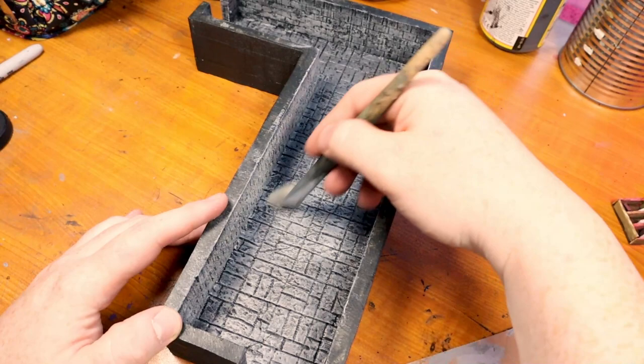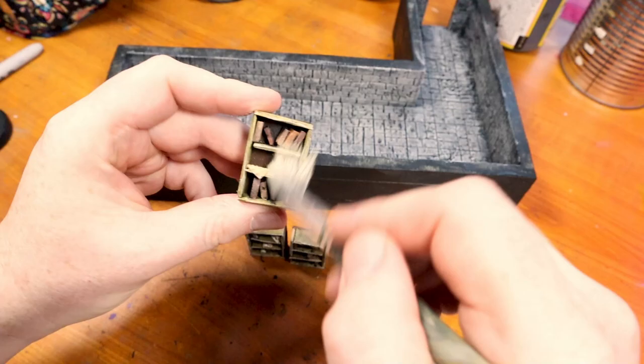I then do a highlight of antique white to the tile and to the bookshelves. This step is just to pick out a few more easy details.